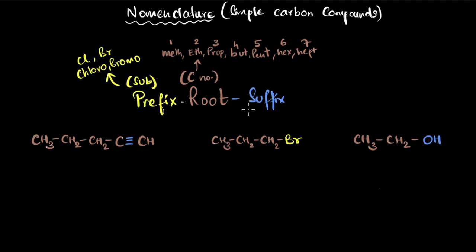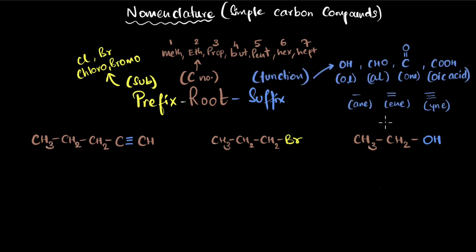And then finally, it ends with a suffix. And suffix is the functional group. So for example, if you have an alcohol attached, it ends with ol. If an aldehyde is attached, it ends with al. On, oic acid. If you have none of these, then you can look at the bonds as the suffix. If you have a triple bond, it ends with alkyne, so you end with ine. Double bond ene. And if you have none of them, there is no functional group attached at all, then you just say that there is a single bond, you end with ane.